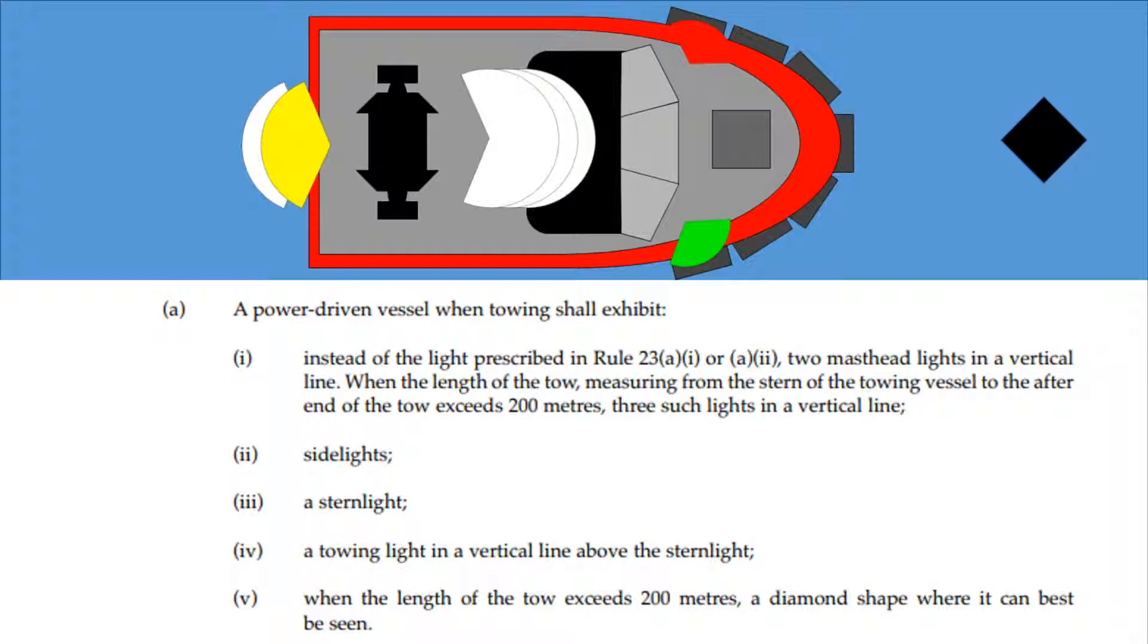So the towing vessel has two masthead lights in place of one masthead light to indicate that it's towing, and that yellow towing stern light vertically higher above the normal white stern light at the rear. It also has, potentially, an additional third masthead light if the length of tow is over 200 meters. Other than that, it has the lights prescribed for a power-driven vessel, i.e., two sidelights and a single stern light.